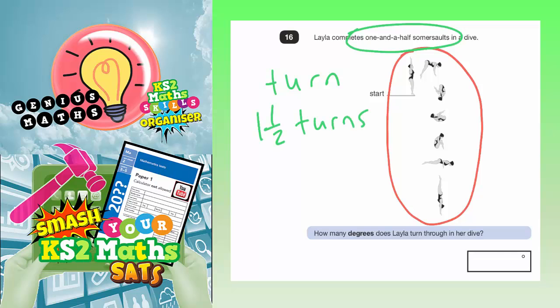And there's a very easy way of doing this, because one full turn is 360 degrees, so half a turn would be half of 360. Well, half of 36 is 18, so half of 360 is 180.